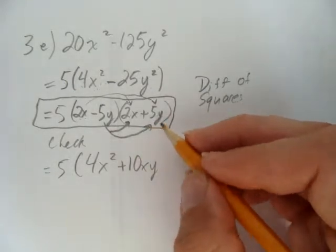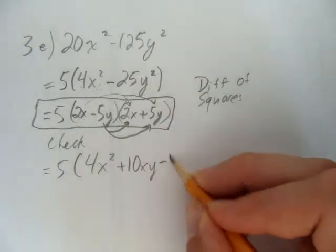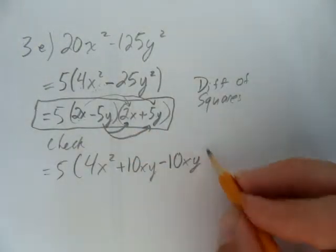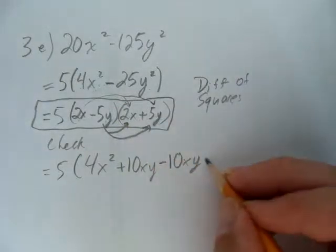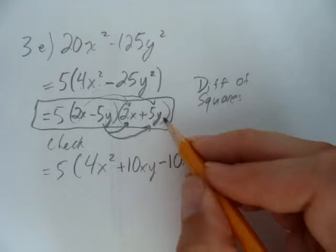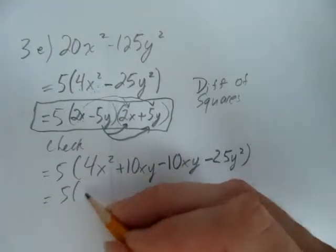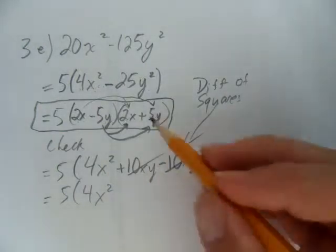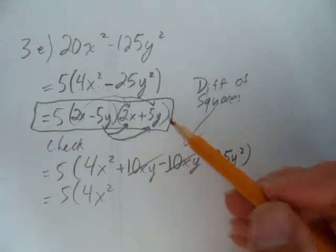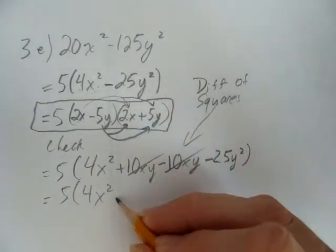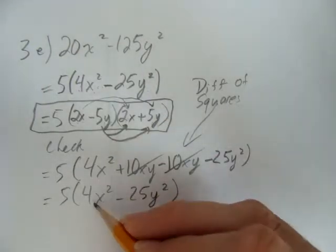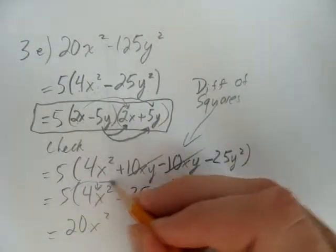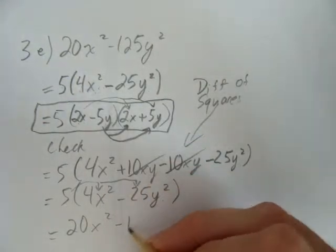Let's do the same with each of the other terms. Negative 5y times 2x gives negative 10 — that's 5 times 2 — so negative 10xy. And negative 5y times positive 5y: negative 5 times positive 5 is negative 25, y times y is y squared. So we get 5 times 4x squared. But look — these middle terms cancel. That's the whole idea behind difference of squares. We know this pattern ahead of time, so we can do this simplification easily, knowing that the middle terms cancel out and you're left with just the front and back terms. Multiplying the 5 back in: 5 times 4x squared and 5 times negative 25y squared gives us the original question back. That's difference of squares.